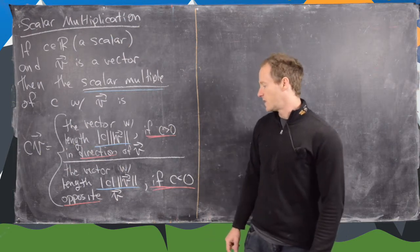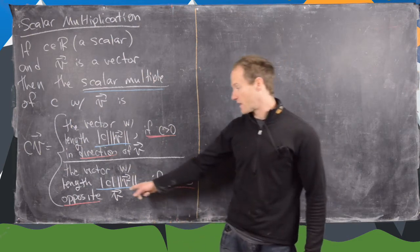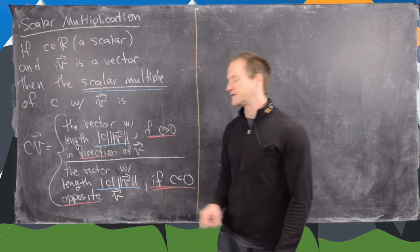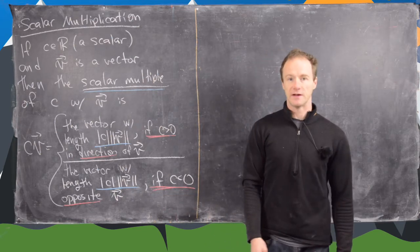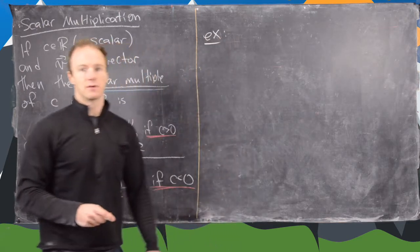And then if c is negative, then it's the vector with the same length, so absolute value of c times length of v, but it is opposite v.